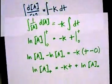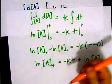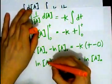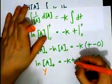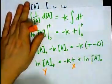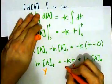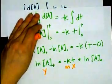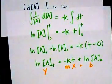What this means is that if I graph ln of A on my y-axis and t on my x-axis, I'm going to end up with a straight line with a slope of negative K and a y-intercept of ln A0.